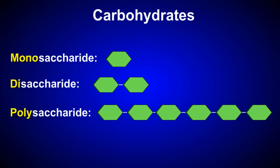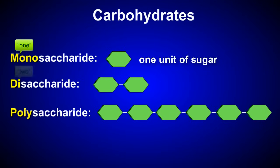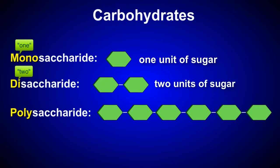Mono means one, so a monosaccharide is a carbohydrate made of one unit of sugar. The prefix di means two, so a disaccharide is a carbohydrate made of two units of sugar.